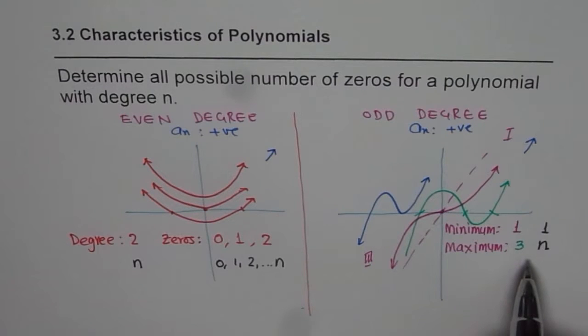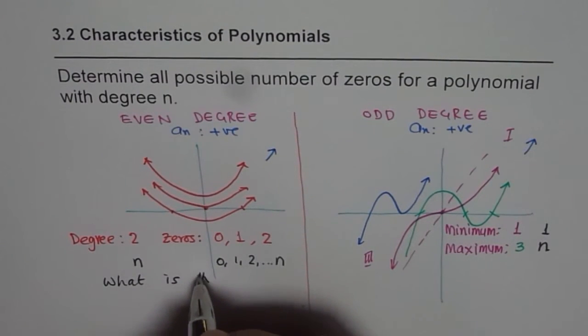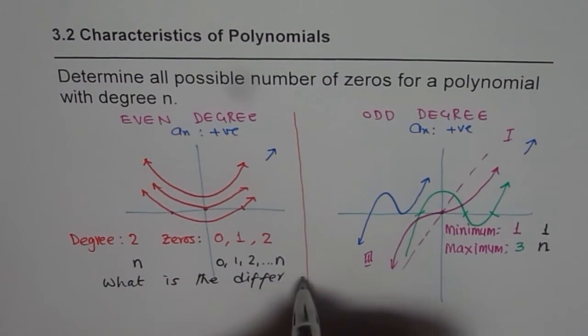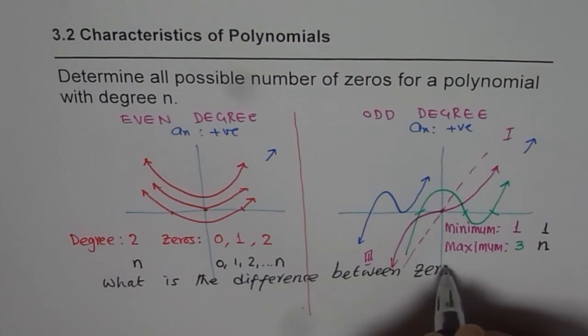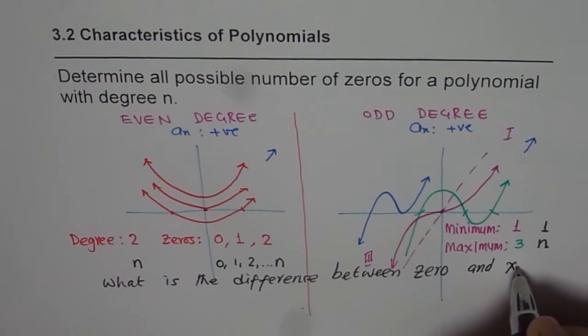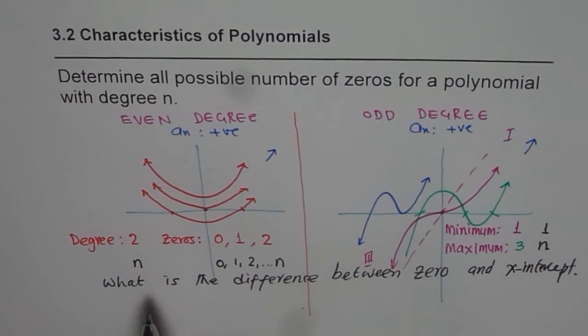Now the question here for you is: what is the difference between zeros and x-intercepts? Think about it. Now all these points are x-intercepts also. We can say the number of x-intercepts are zero, one, or two for a parabola. Minimum number of x-intercepts for an even degree polynomial is zero, and maximum number of x-intercepts is n. Now what is the difference between zeros and x-intercepts?